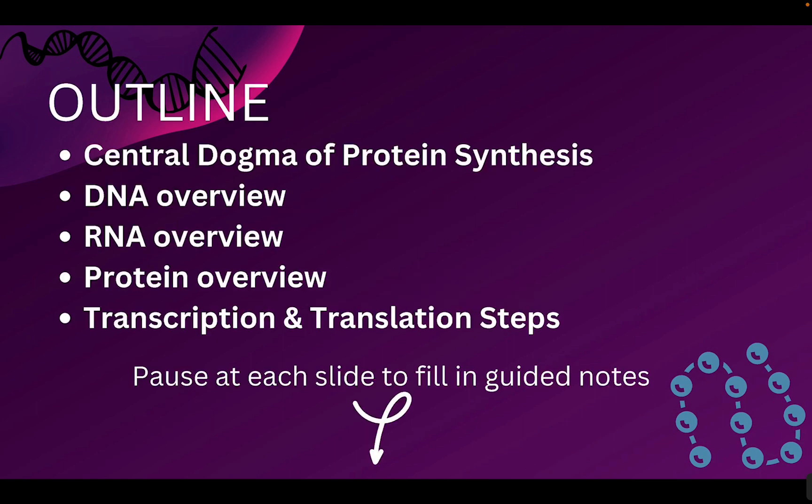For today's notes, we're going to start with what's called the central dogma of protein synthesis. Then we're going to go through the three steps of protein synthesis and the components: DNA, RNA, and protein. Then the actual stages in which protein synthesis takes place, called transcription and translation. You can pause at each slide to fill in the guided notes found in the description below, or you can watch the notes straight through.